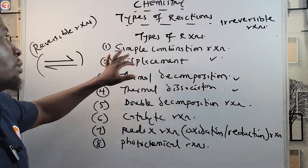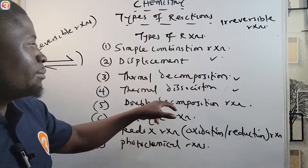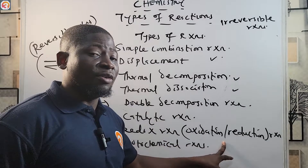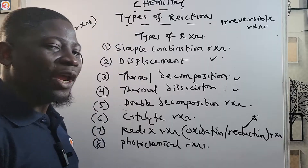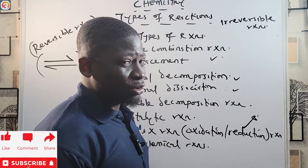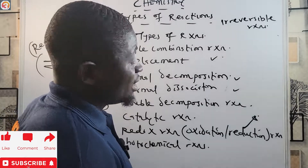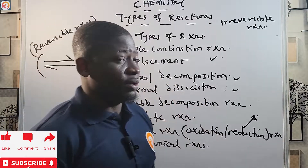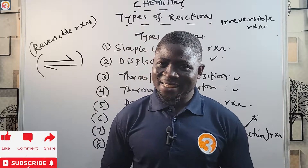So those are the types of reactions — simple combination, displacement, thermal decomposition, thermal dissociation, double decomposition, catalytic, oxidation and reduction, and photochemical reactions. The oxidation and reduction part is often difficult for students, but we are going to work through it together. We will cover all these types in the next episodes, beginning with the simple combination reaction. My name remains Overlabi — thank God — and I would love to see you in the next class. Thanks for watching.